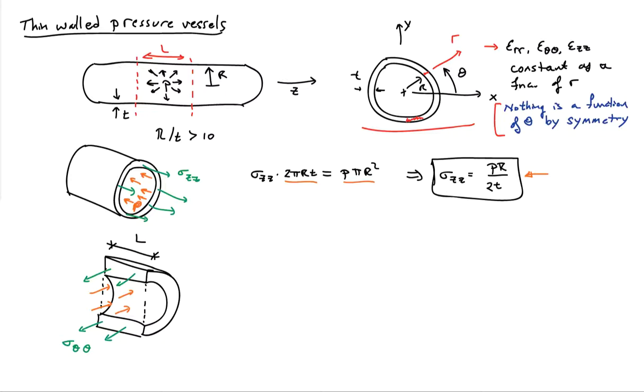I can also look at the hoop stress by making a second section cut over here, a distance L away from my first section cut. And so if I redraw that, I have this figure down here. And acting on the section cut here, I have sigma_theta theta, and I have the pressure p. And so I can do sum of the forces in the direction orthogonal to that section cut.